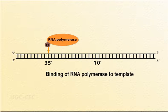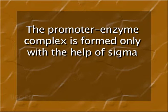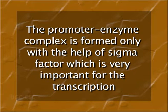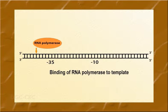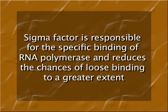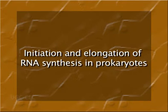The binding of the core enzyme without sigma factor to DNA is not promoter-specific. The promoter-enzyme complex is formed only with the help of sigma factor, which is very important for transcription. RNA polymerase sometimes binds at a site other than the promoter site, which is known as loose binding. Sigma factor is responsible for the specific binding of RNA polymerase and reduces the chances of loose binding to a greater extent.